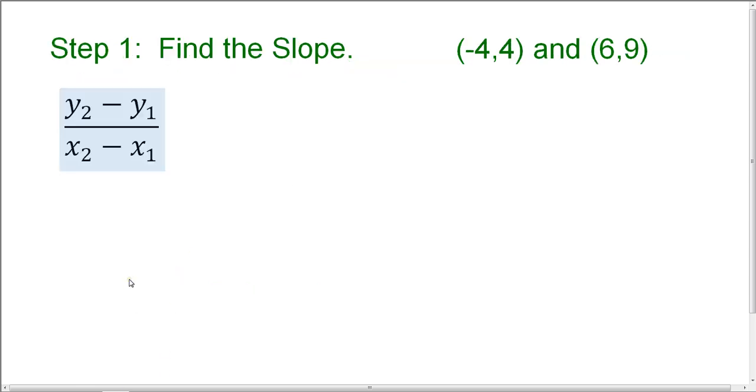So step 1 is to find the slope. And you should know how to find the slope given two points. We're going to use the slope formula, which is y sub 2 minus y sub 1 divided by x sub 2 minus x sub 1. So I'm going to go ahead and label my two points. This is my first point.